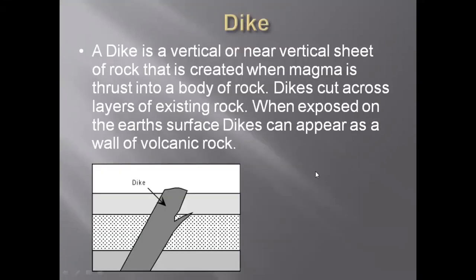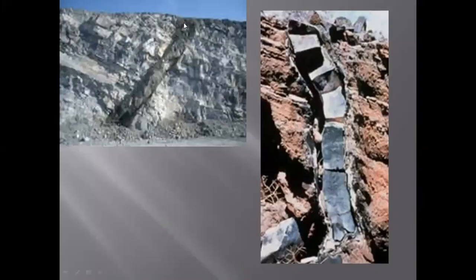A dike is any rock that cuts through already existing rocks at an angle. Dikes cut across the layers of existing rock, and when exposed on the Earth's surface they appear as a wall of volcanic rock. You can see beautiful examples of dikes here — the orientation of the strata is one way, but there is one feature cutting across all the layers, which is why we call it a dike or discordant structure.